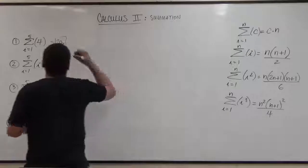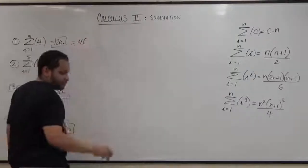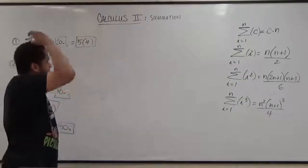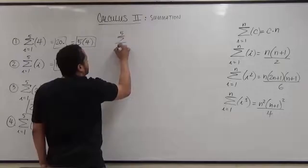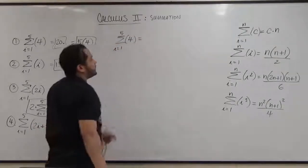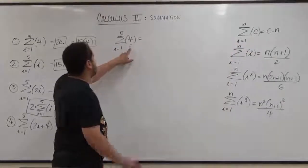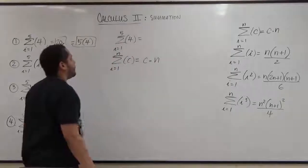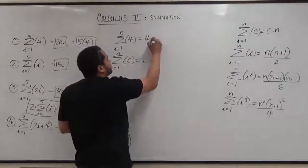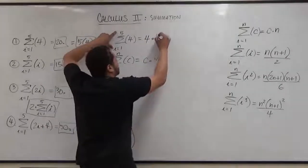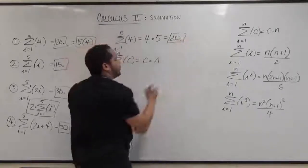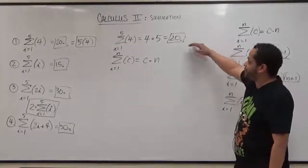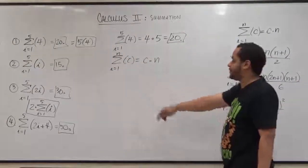If you remember before, when we got 20 we had 5 times 4 because there were five 4s adding up. So for the first problem, the summation from 1 to 5 of the constant 4: the constant is our c which is 4, and n is our 5. The formula becomes c times n, so 4 times 5, which is also 20. The formula is a shortcut — always accurate — and it reflects the same exact work we had in our notation.